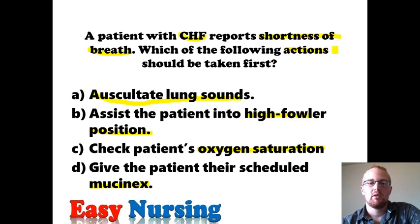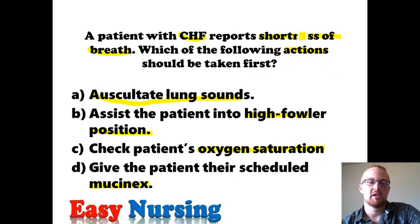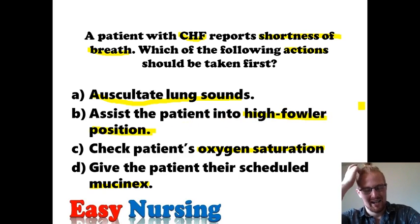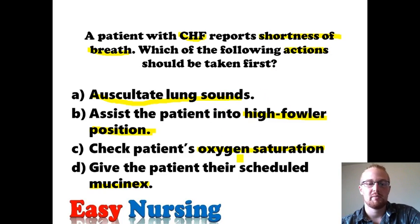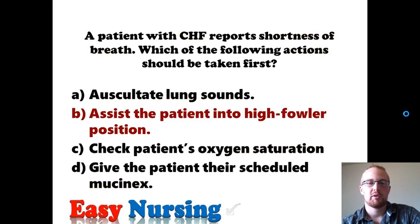The main thing here is deciding priority. There are two ways to think of priority questions: the nursing process ADPIE — so you assess first, which would be auscultating or checking oxygen saturations — or the ABCs. Because this patient has shortness of breath, we need to do something to help them. Instead of assessing first, we're going to use the ABCs: airway, and we're going to help them get to a high-Fowler position. That's the correct answer.